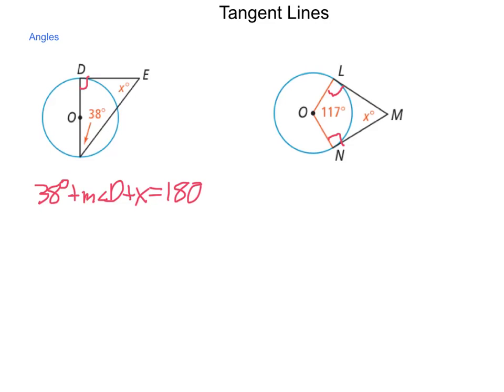The measure of angle D is 90. 90 plus 38 is 128. So 128 degrees plus X equals 180 degrees. Subtraction property of equality tells me I can subtract 128 degrees from both sides, which means that X is equal to 58 degrees.